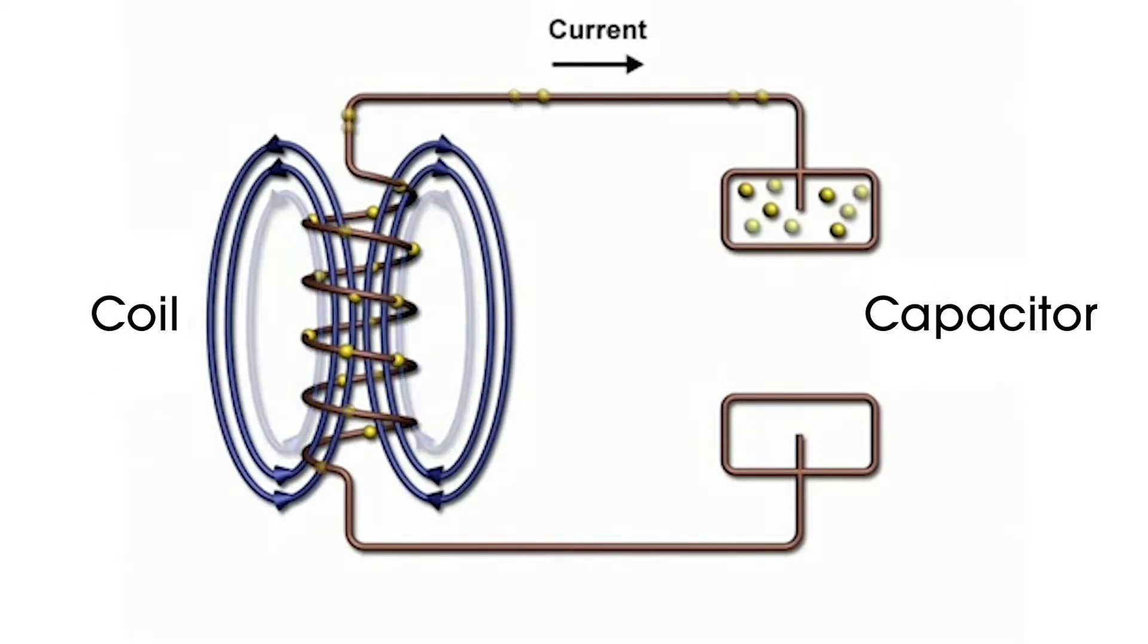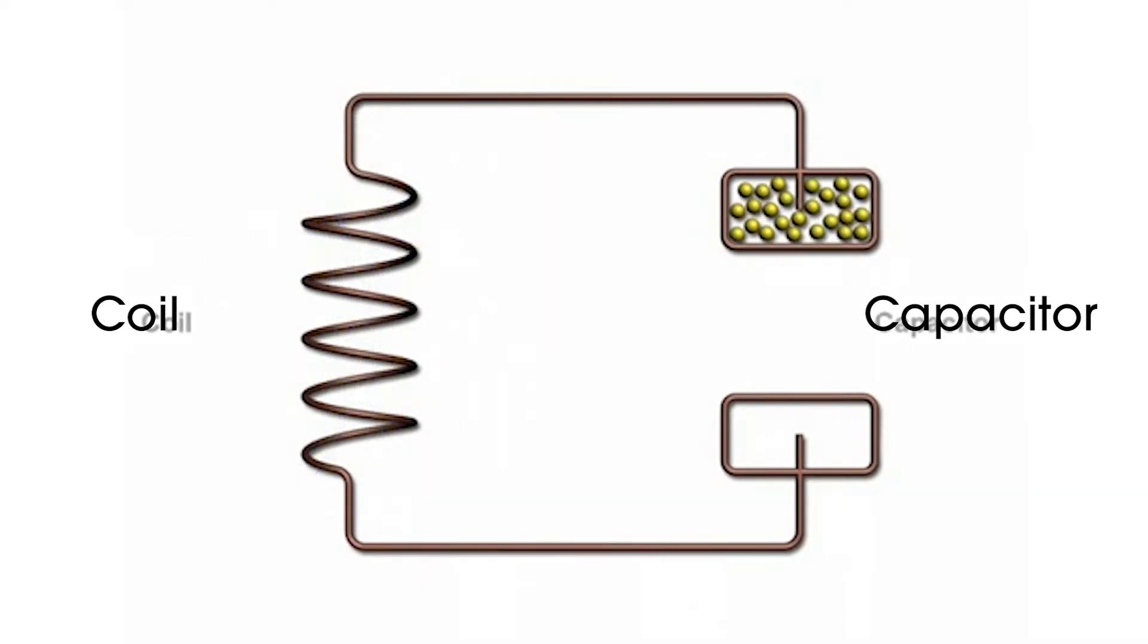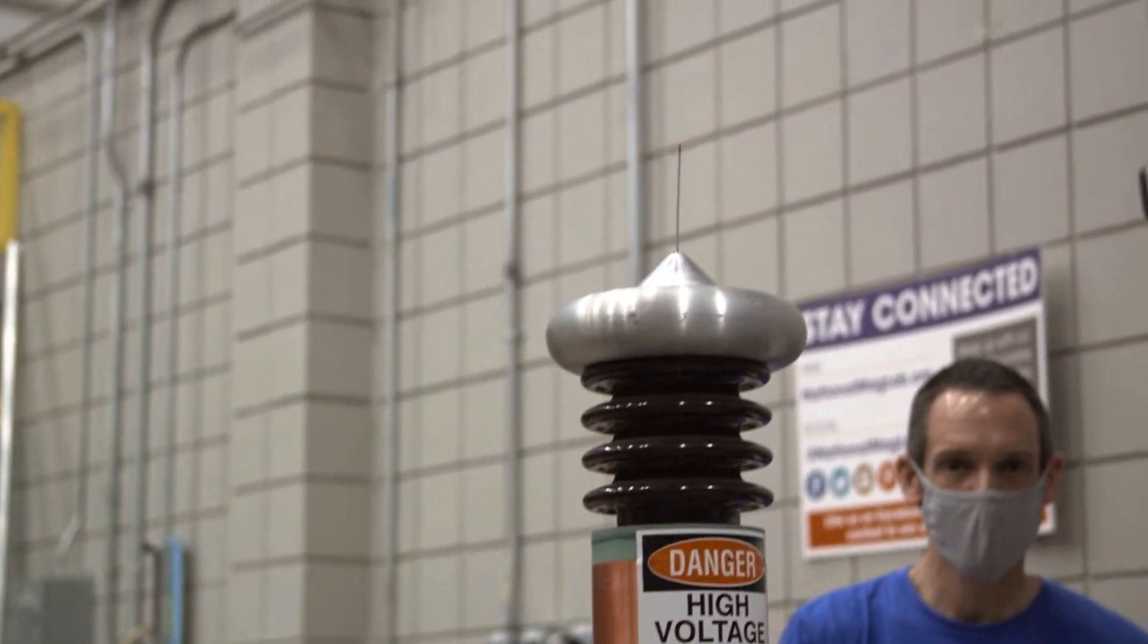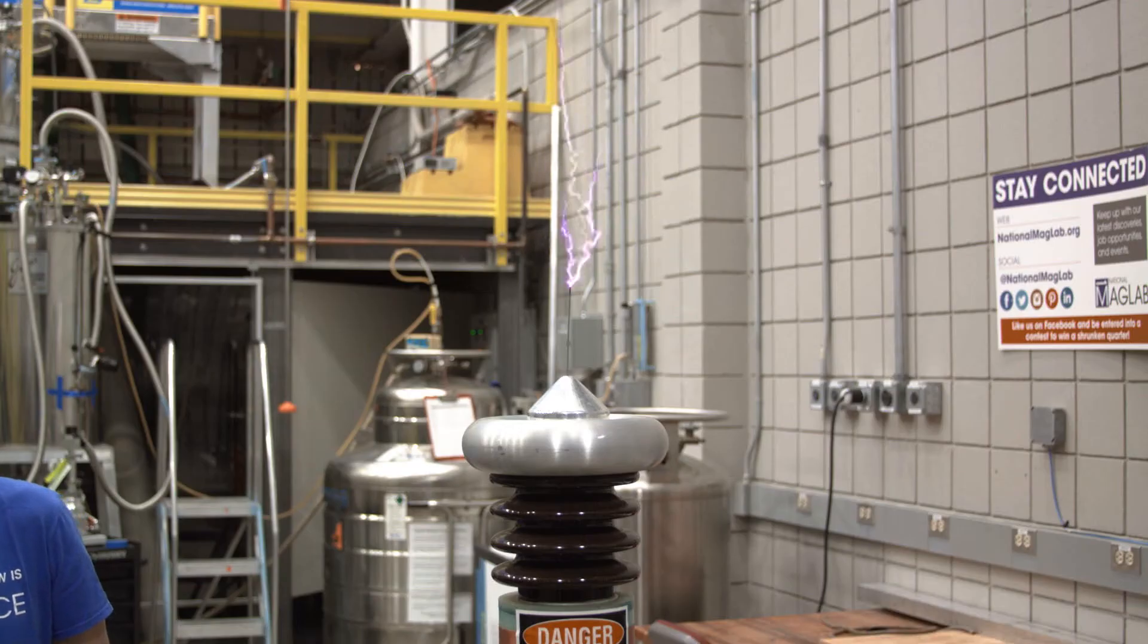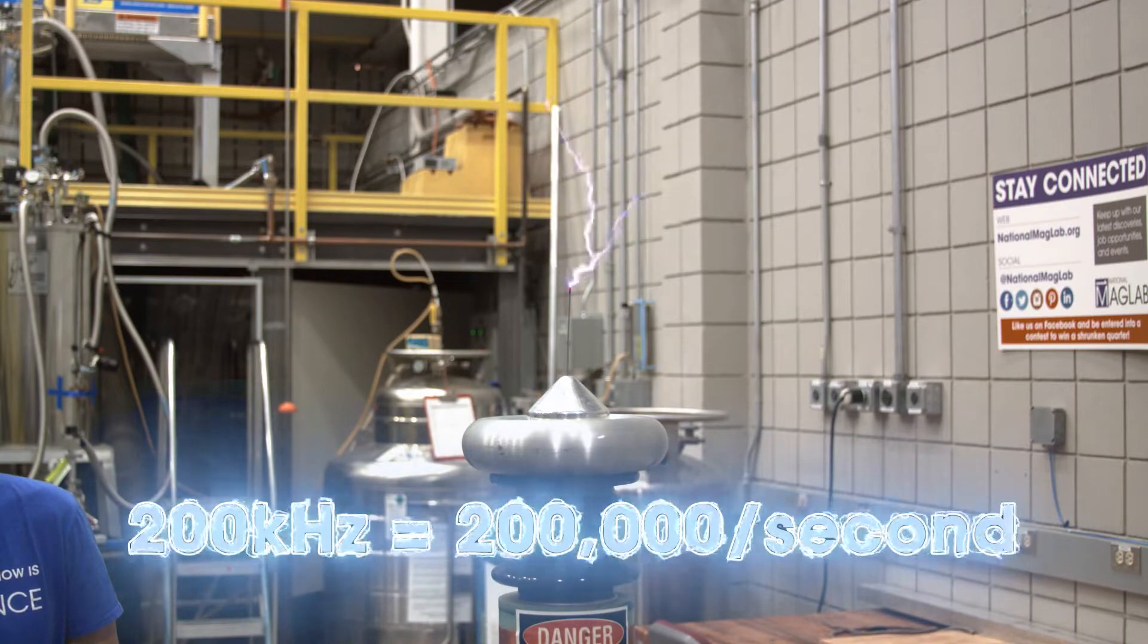The frequency where each circuit works is determined by inductance and the capacitor. When both circuits have the same operating or resonant frequency, it is easier to transfer energy between them. The resonant frequency of this Tesla coil is about 200 kilohertz or 200,000 times a second.